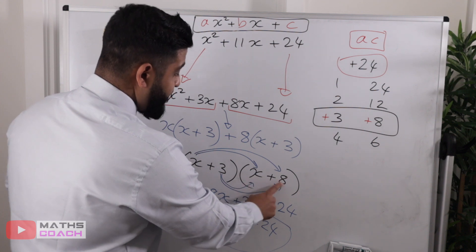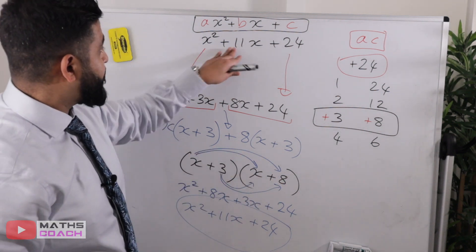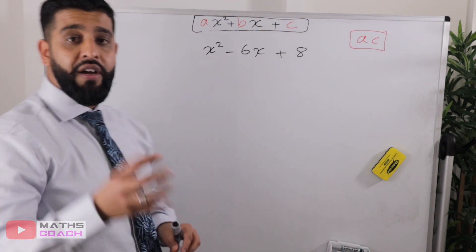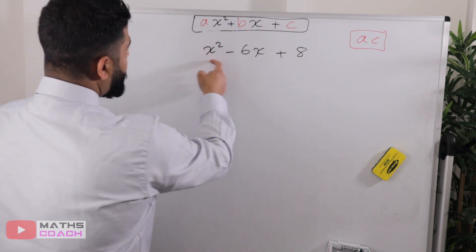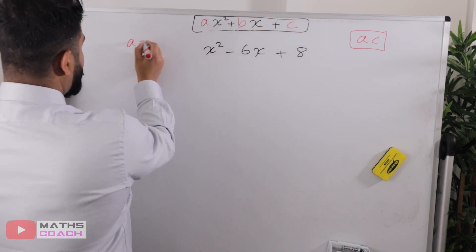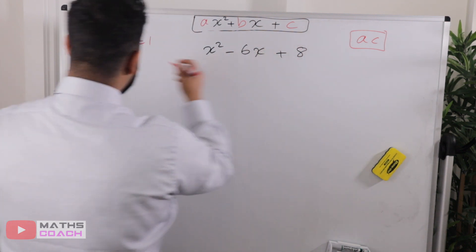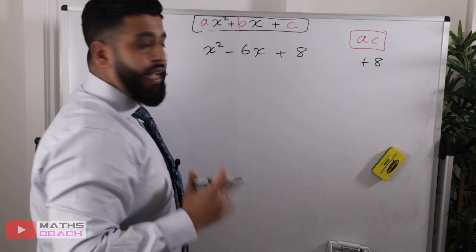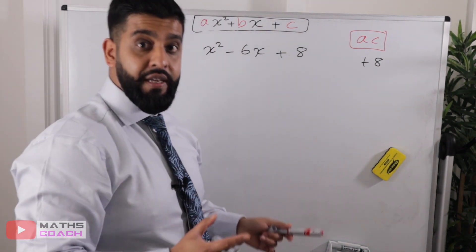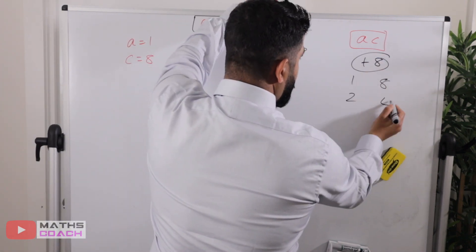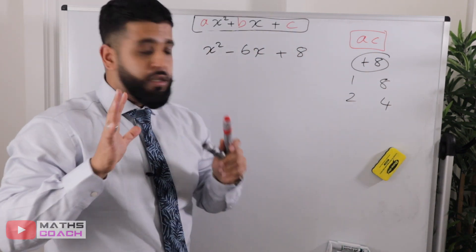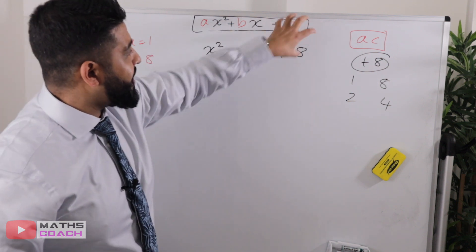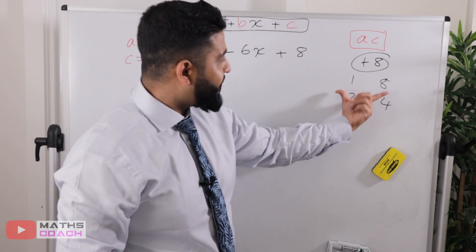So (x + 3)(x + 8) is the factorization of x² + 11x + 24. On to our second example: x² − 6x + 8. We identify a = 1 and c = positive 8, so a × c = 1 × 8 = positive 8. We write the factor pairs of 8: 1 and 8, and 2 and 4.